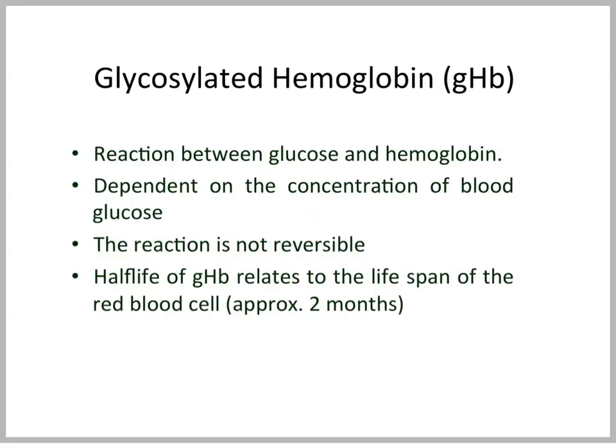There is another test used in people — we do not have this test for the dog or the cat at this time. In this test called glycosylated hemoglobin, we look at a reaction between glucose and hemoglobin. With this test, we look at the previous two months of glucose control, because the half-life of hemoglobin is longer than that of albumin. We do not currently have this test available in the dog or the cat.